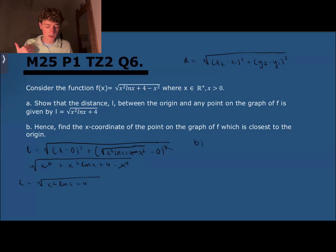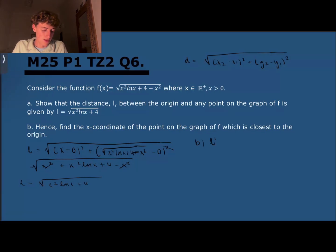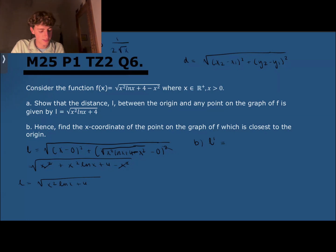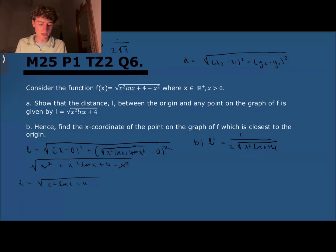In part b, we need to find the x-coordinate on the graph of f which is closest to the origin. We now have a function giving us the distance to the origin, so to find the minimum we take the derivative l prime and set it to zero. We apply the chain rule: for root(x² ln x + 4), the derivative starts as 1 over (2 root(x² ln x + 4)), and because the inside is complex, we multiply by the derivative of the interior.